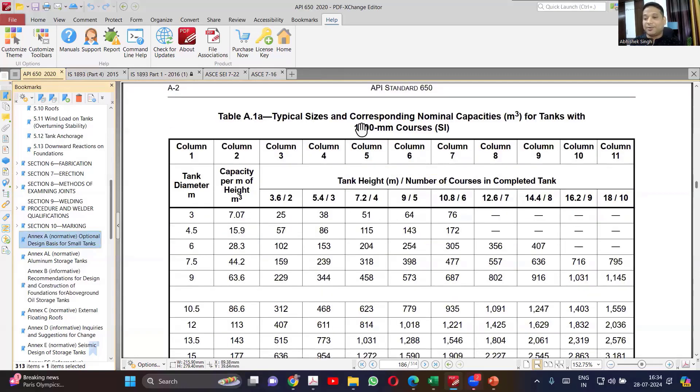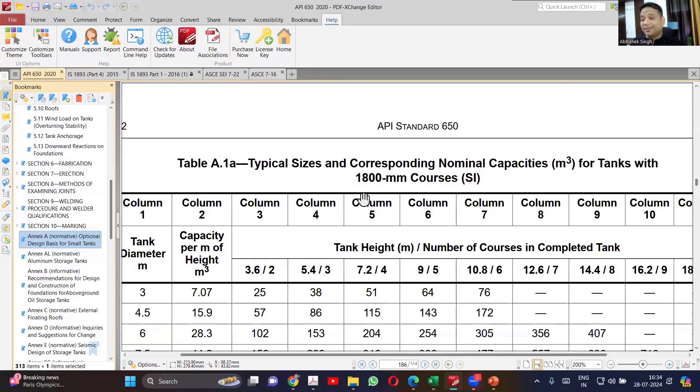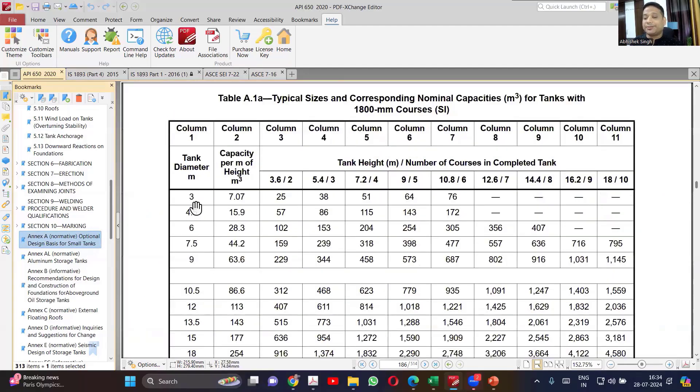So it was like if you are having a shell course, you are using 1800 mm shell course, then based on the tank diameter, see what is the capacity you want and then you will be able to get the height of the tank.